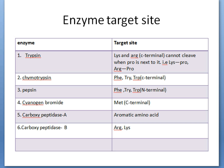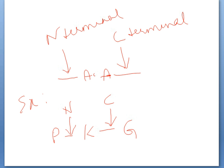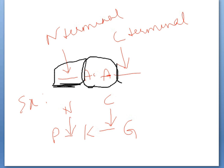For those new to this topic, here I have highlighted what C-terminal and N-terminal mean. For any amino acid, the bond present before that amino acid is its N-terminal bond, and the bond present after it is its C-terminal peptide bond. Here is the tripeptide proline-lysine-glycine as an example.